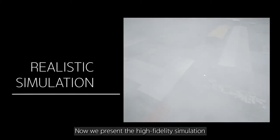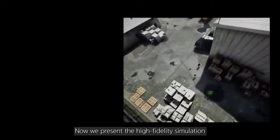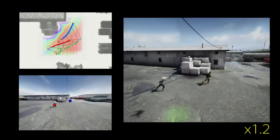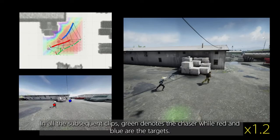Now, we present the high-fidelity simulation with a large scale. In all the subsequent clips, green denotes the chaser while red and blue are the targets.